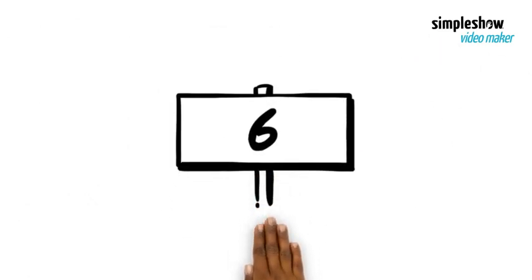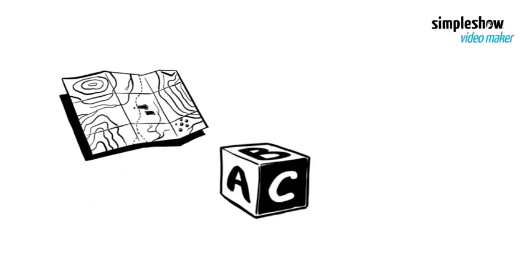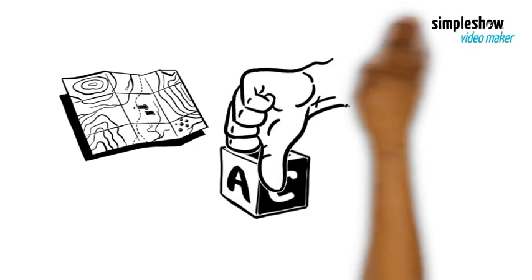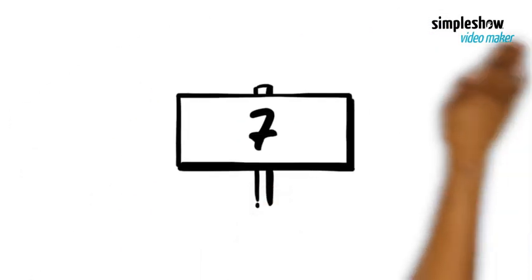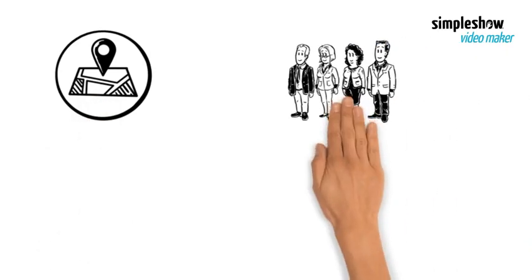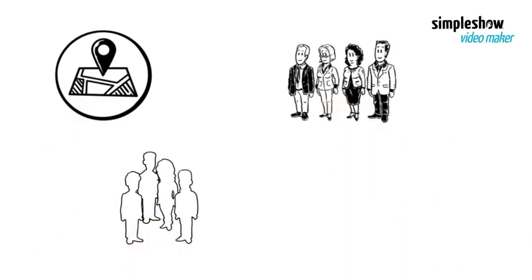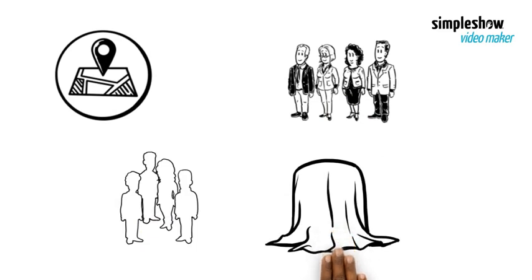Number 6. A map has to generalize, else it will not be useful. Number 7. Every element in a map is in reality unique, but you need to group them on the map, so the map is masking reality.